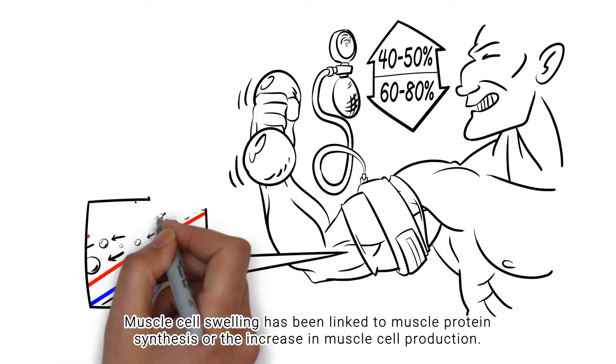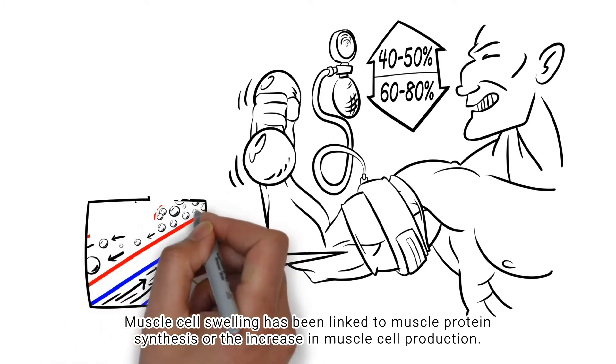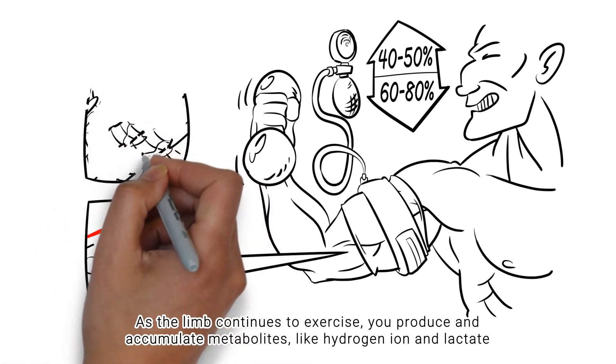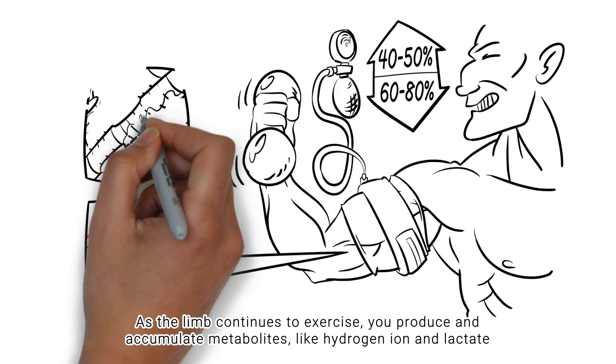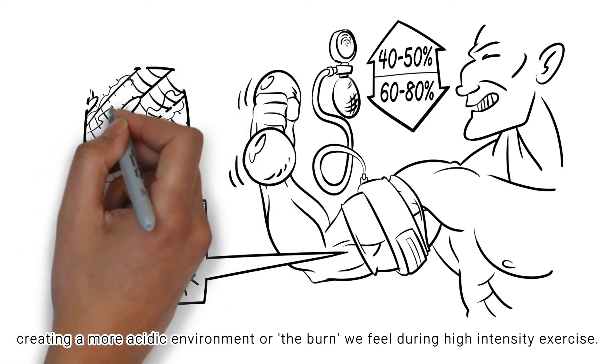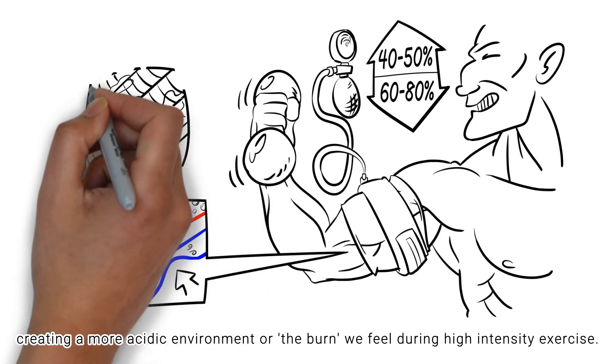Muscle cell swelling has been linked to muscle protein synthesis, or the increase in muscle cell production. As the limb continues to exercise, you produce and accumulate metabolites like hydrogen ion and lactate, creating a more acidic environment or the burn we feel during high-intensity exercise.